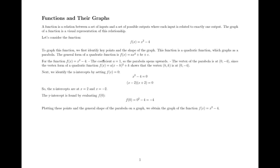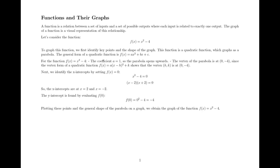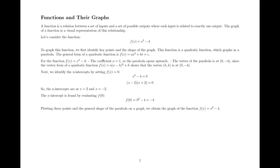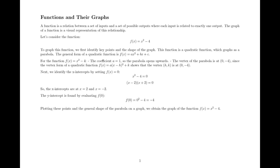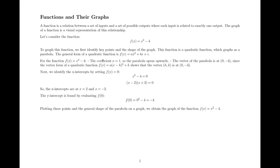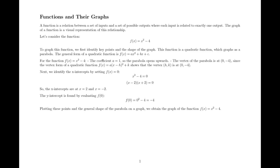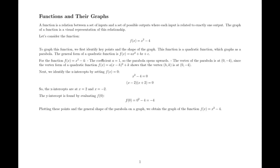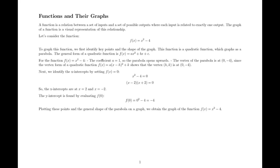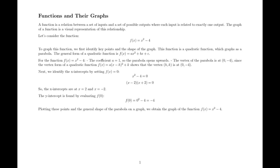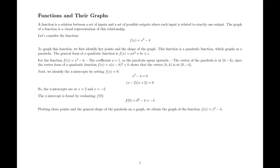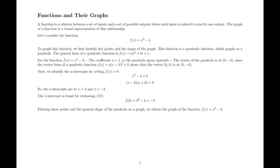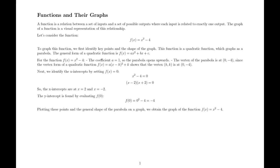The vertex of the parabola is at the point (0, -4), since the vertex form of a quadratic function f(x) = a(x - h)² + k shows that the vertex (h, k) is at (0, -4).